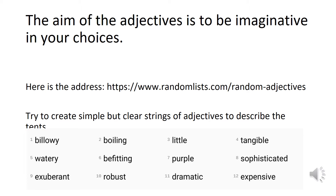Here are some of the words I was given when I went onto the random word generator: billowing, which means really big and blowy; boiling; little; tangible, something you can touch; watery; befitting, which means something is suitable or fits that place and context; purple; sophisticated, which means quite formal and posh; exuberant, something that's bubbly and full of energy; robust, meaning strong; dramatic; and expensive. So there are quite a few words there, and I'm just going to pick some that I think might work for me.